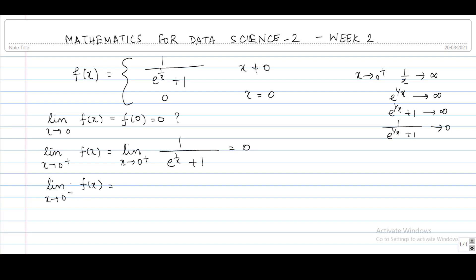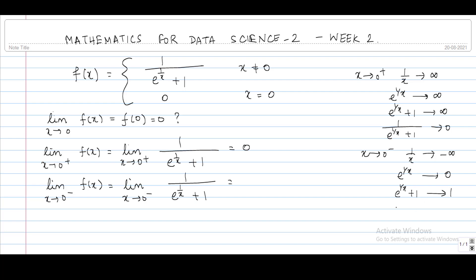Let us similarly calculate the left hand limit. Since we are approaching 0 from the left we will have non-zero points, so the definition of f will again be 1 / (e^(1/x) + 1) for these points. As x tends to 0-, 1/x tends to negative infinity, so e^(1/x) will tend to 0. Therefore e^(1/x) + 1 will tend to 0 + 1, that is 1. So 1 / (e^(1/x) + 1) will tend to 1.